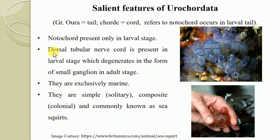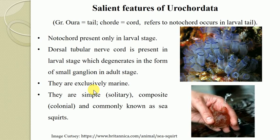The dorsal tubular Nerve Chord is present only in the larval stage, which degenerates into the form of a small ganglion in the adult stage. These organisms are exclusively marine, with cosmopolitan distribution, found in all seas at all depths.